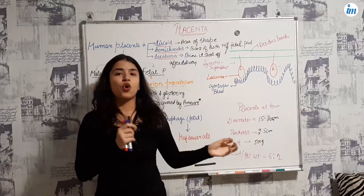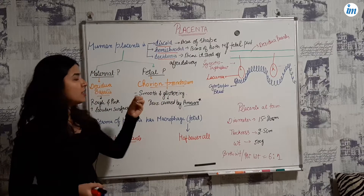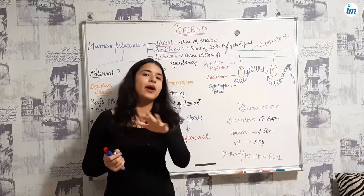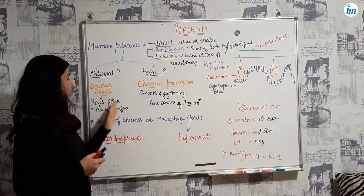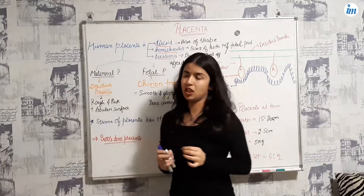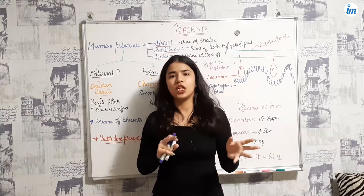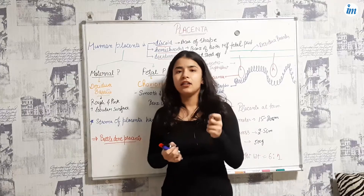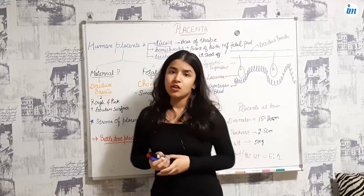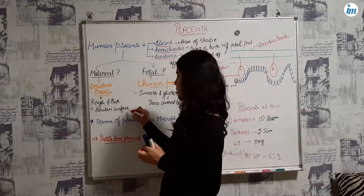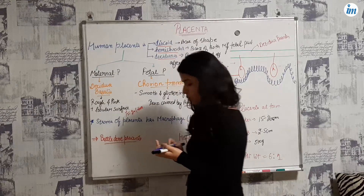The chorion is nothing but chorionic villi. Generally, this chorion is smooth and glossy because it is covered by the amnion. The maternal part — the decidua basalis — is rough and pinkish in color, and it is lobular, having 15 to 20 lobes. Each functional unit of this lobe is known as a cotyledon.